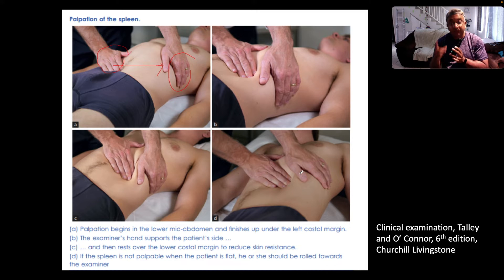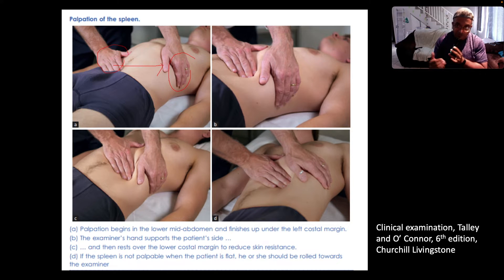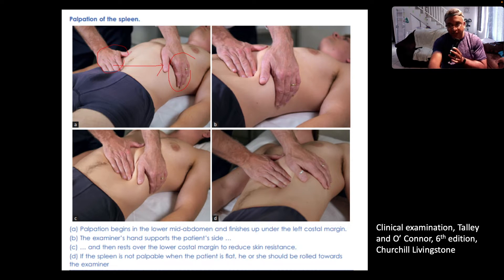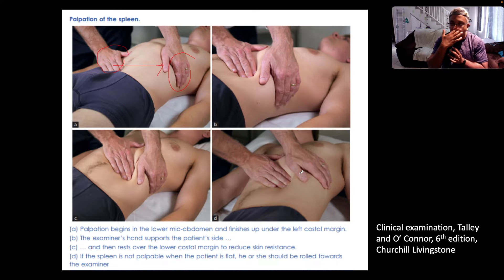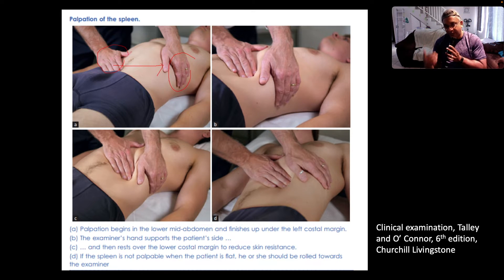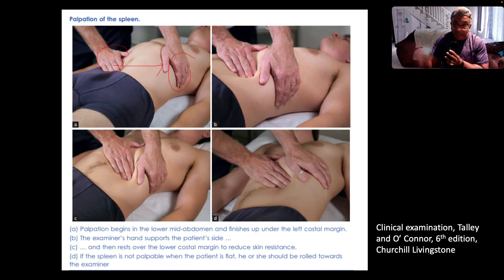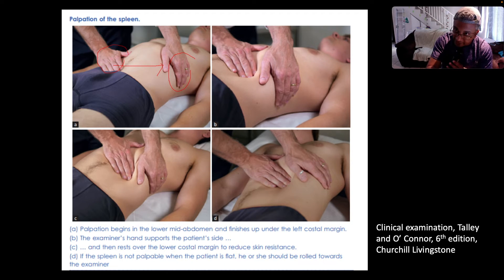If you're still not sure, you can then percuss in Traube's space. Traube's space is the anatomical space, the boundaries of which are the sixth rib superiorly, the left costal margin inferiorly, and the mid-axillary line laterally. If you're percussing that space and it is dull, you can bet your bottom dollar that we're dealing with splenomegaly.